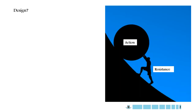Before we start beam design theories, let's talk about design in general. What I understand by design is that resistance should be greater than the action. Look at the picture on the right side — a person is trying to hold a ball on a slope. If we consider the ball as an action and the person as a resistance, if the person is not stronger, he cannot resist the ball from falling down the slope. So we can say, if the resistance is larger than the action, then the structure will be stable.